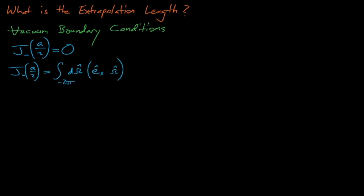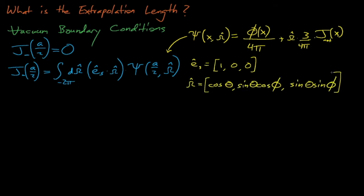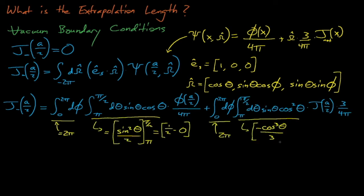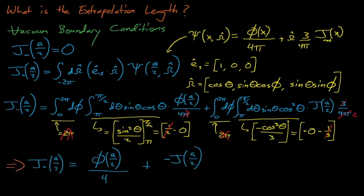We can solve for the incoming current at the boundary by integrating our P1 approximation for the angular flux over the negative 2π half sphere. After working through the math, we see that the incoming current equals the scalar flux at the boundary divided by 4 minus one-half times the net current at the boundary.